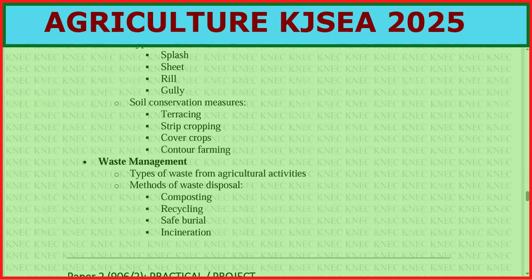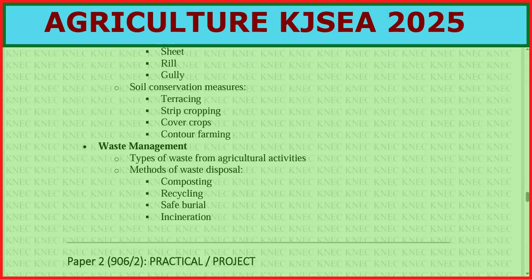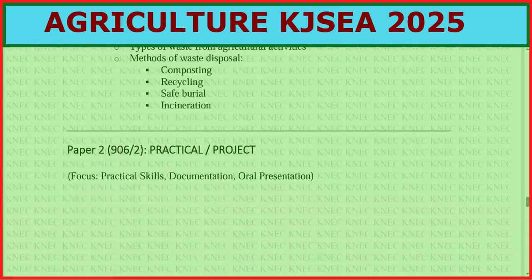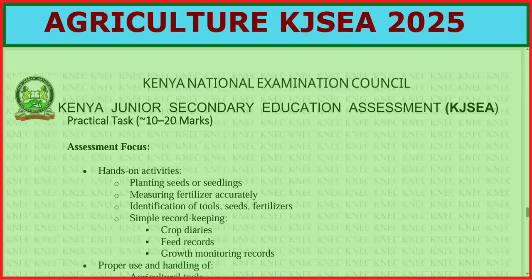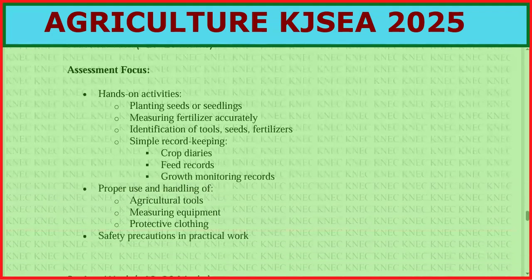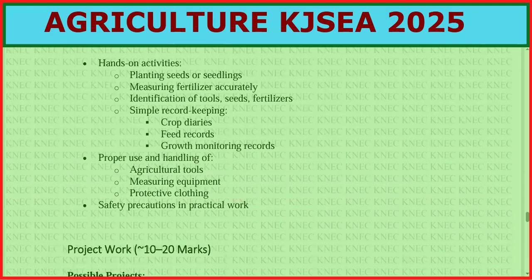For waste management, cover types of waste from agricultural activities, methods of waste disposal like composting, recycling, safe burial, and incineration. For practical skills, focus on hands-on activities: planting seeds and seedlings, measuring fertilizer accurately, identification of tools, seeds, and fertilizer, simple record keeping, feed records, growth monitoring, and proper use and handling of agricultural tools, measuring equipment, and protective clothing.